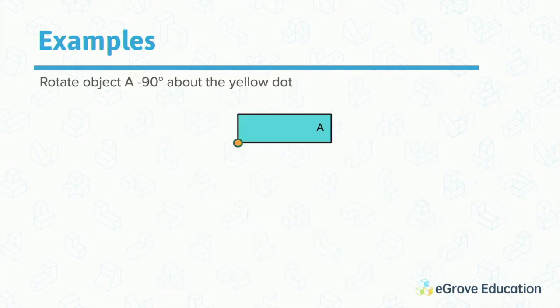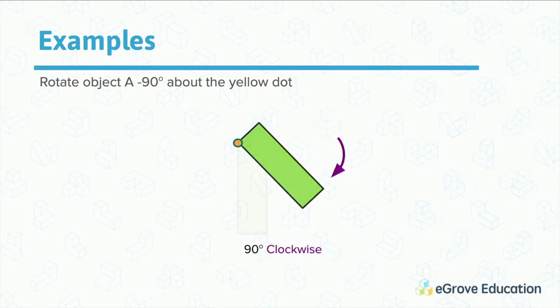Here's an example. We have object A and the yellow dot represents the pivot point. We want to rotate the object negative 90 about the yellow dot. Remember, negative rotations are clockwise. As we go down, we end up at our final resting point, and that's what you would draw in the app.